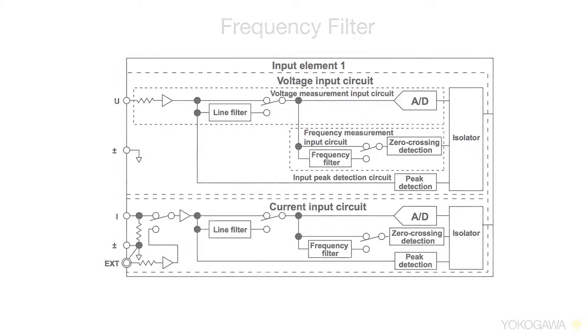The frequency filter is inserted into the frequency measurement input circuits and affects only frequency measurements. As shown in the diagram, the frequency filter is in parallel with the measurement circuit.